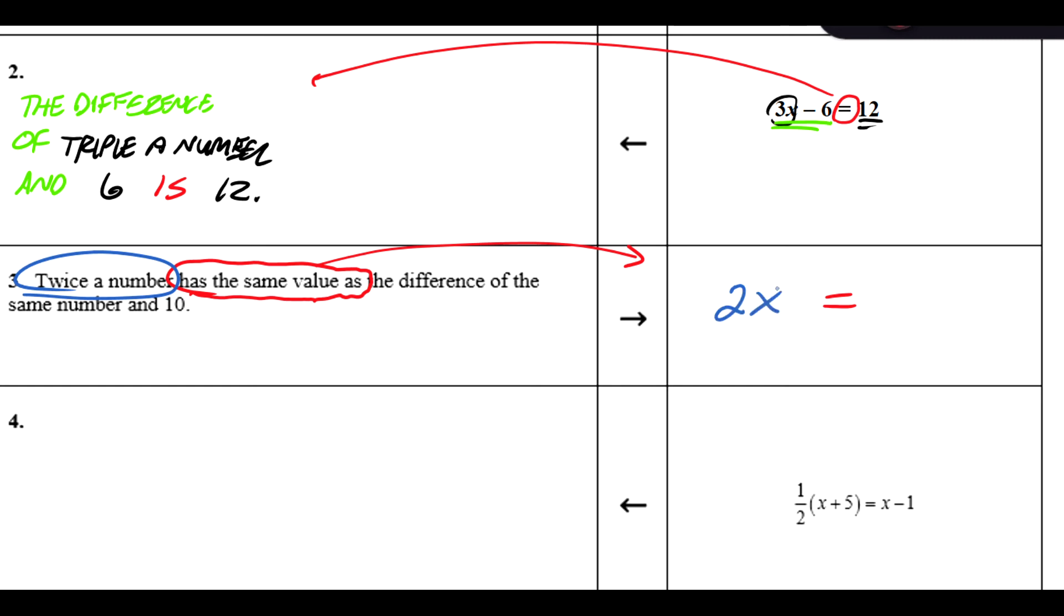And then the right side would be the difference of the same number and 10. Well, when I translate the right side, the difference of is a subtraction. The two things that I'm subtracting is the same number and 10. Well, x represents the number, and then 10. So this would be a way we can translate our English into the algebraic equation.